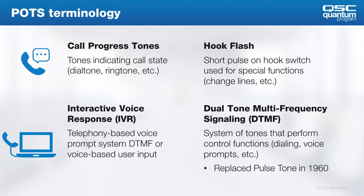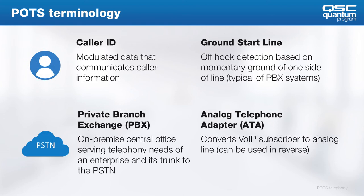DTMF denotes the types of tones used for touch tone dialing, which replaced pulsed dialing in the 1960s. Using this system, each key on the telephone dial pad plays two tones simultaneously — these are the tones you use to play Mary Had a Little Lamb on your telephone. The tones can be heard by the receiving device and interpreted as needed. If you've ever tried to route yourself through a technical support line, chances are you used an interactive voice response, or IVR system, which gives you voice prompts and collects your DTMF input to navigate menus. Caller ID is a modulated data technology that communicates the caller's information.